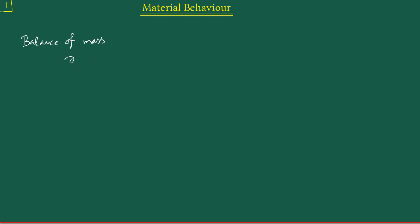Towards that end, I'll first take stock of the various equations available to us from our studies in the previous two chapters, and then try to see what we are missing. A realization of what we are missing will help us towards a discussion of material behavior. Back in the chapter on stress, we had spent considerable time discussing the balance of linear momentum, and while discussing that, we had mentioned that information about the conservation of mass was embedded in it.